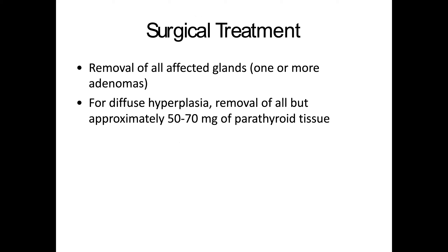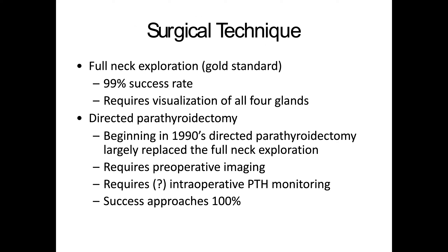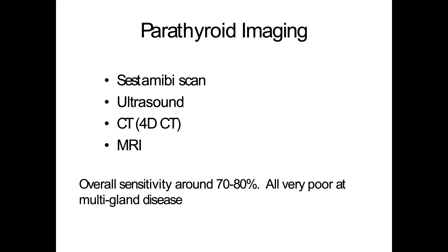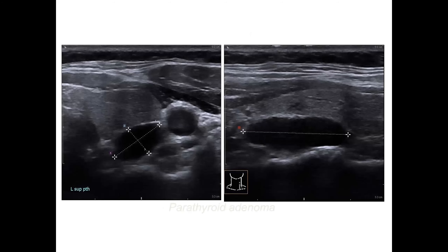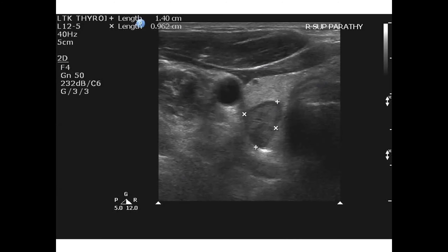Surgical treatment: they may remove one or more glands for adenomas. If they have diffuse hyperplasia, they'll probably remove almost all of it. The gold standard is full neck exploration visualizing all four glands, but we're starting to see more directed parathyroidectomy with preoperative imaging and intraoperative parathyroid hormone monitoring, which has done fairly well without requiring removal of the entire parathyroid. Imaging may include sestamibi scan, ultrasound, CT, and MRI — overall sensitivity is about 70 to 80 percent, but they don't do very well with multi-gland disease.